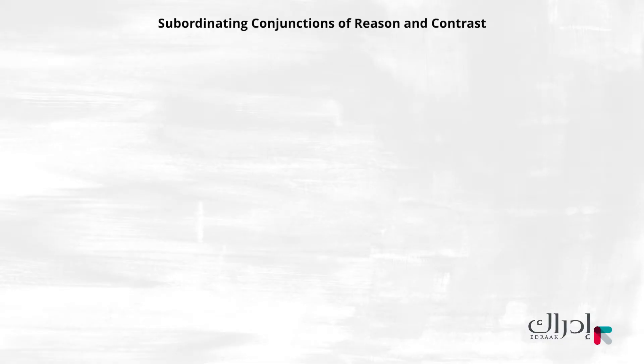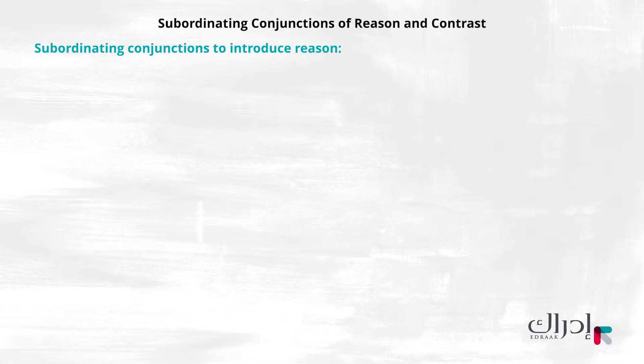There are different kinds of subordinating conjunctions. Today we are going to talk about two common ones. First, we are going to focus on subordinating conjunctions that introduce clauses of reason. Clauses of reason explain why something happens. The most common subordinating conjunctions to introduce reasons are because, since, and as.